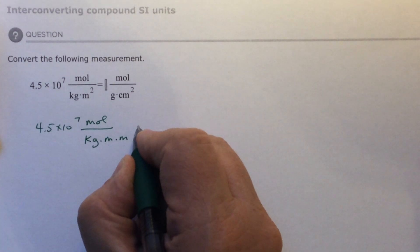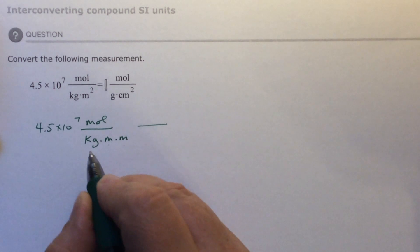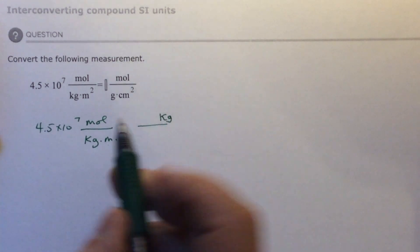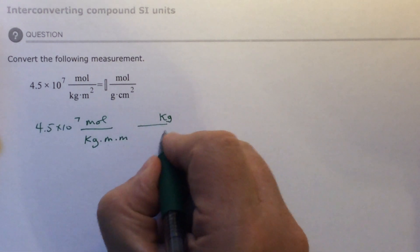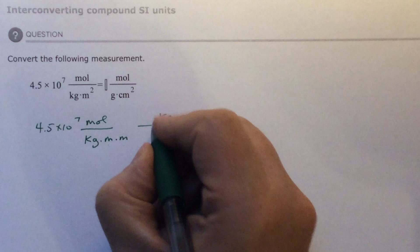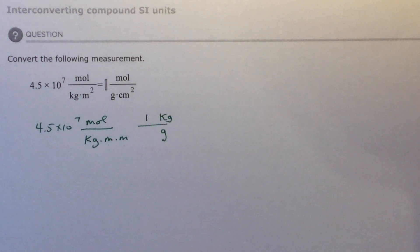So let's do kilograms first. I've got it on the bottom. I want to get rid of it on the bottom, so I'm going to put it on the top. And I want to go to grams, so I'm going to put grams on the bottom. Now kilograms is bigger than grams, so I'm going to put one kilogram equals a certain number of grams. Kilo remembers 1,000.